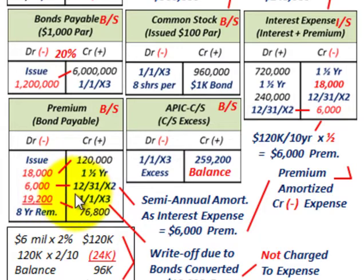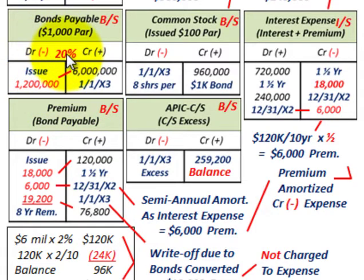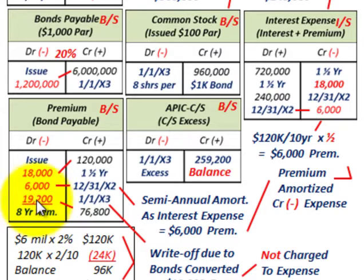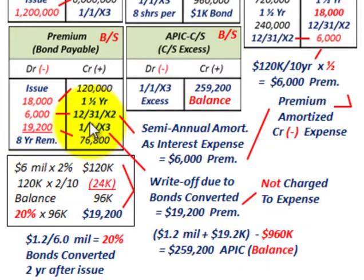Now comes the conversion of these bonds. We need to look at how we reduce our premium based on the conversion. We're converting 20% of the bonds, which means the par value is $1.2 million. We debit bonds payable by $1.2 million. The associated premium amount based on that $1.2 million par value is going to be $19,200 on 11X3. We had the total premium of $120,000.